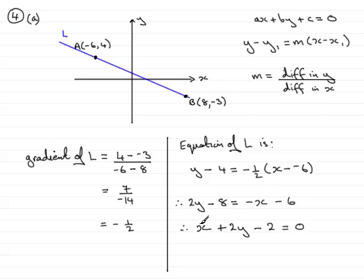So we have this in the form ax plus by plus c equals 0, where a, b, and c are integers. a, remember, would be a 1 here. And that brings us to the end of this part of the question.